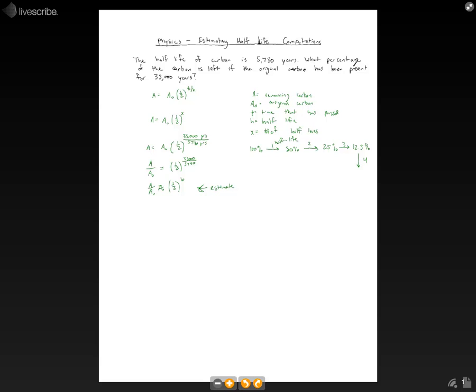If you go through a fourth half-life, you're at 6.25%. A fifth half-life gives 3.125%. A sixth half-life gives 1.5625%. So since we're at about 6 half-lives here, we have about 1.5% of the original carbon left.